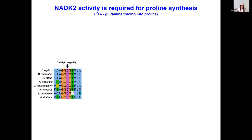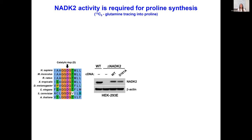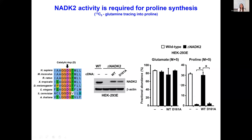Given that NADK2 is a metabolic enzyme with catalytic activity, we asked whether the catalytic activity was required for proline synthesis. NAD kinases have a catalytic motif: glycine-glycine followed by aspartic acid and glycine. We mutated this catalytic residue aspartic acid into alanine and reconstituted NADK2 knockout cells with an empty vector, wild type NADK2, or catalytically dead NADK2 at equal expression levels. We measured proline levels after glutamine tracing and found that loss of NADK2 decreases proline biosynthesis, which can be restored by the wild type but not catalytically dead NADK2, confirming that the catalytic activity of NADK2 is required for proline biosynthesis.